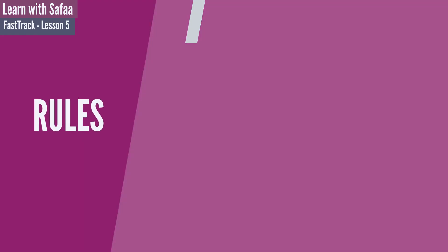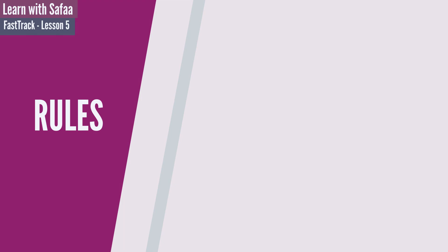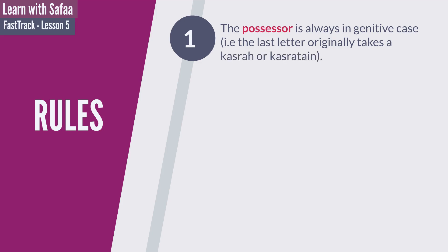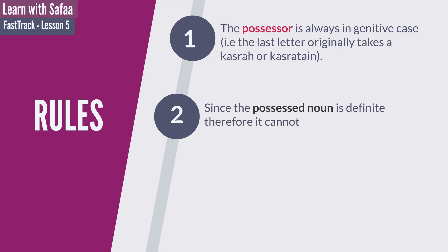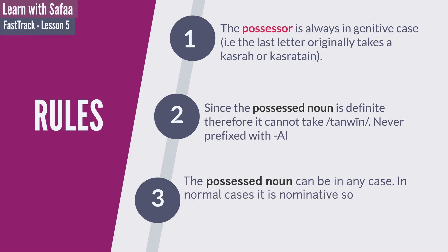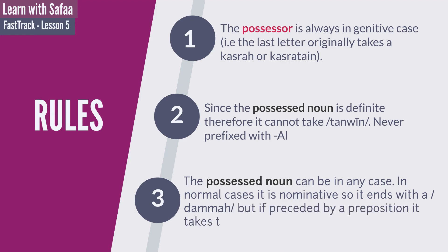There are three important rules to remember while using the possessive expression. The first one: the possessor is always in genitive case — that is, the last letter takes a kasra or kasratain. The second one: since the possessive noun is definite, it cannot take tanwin and it is never prefixed with al. The third one: the possessive noun can be in any case. In normal cases it is nominative, ending with a dhamma. But if preceded by a preposition, it takes the genitive case, ending with a kasra.